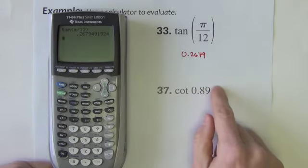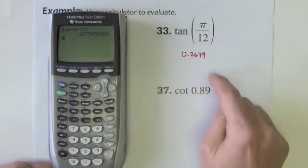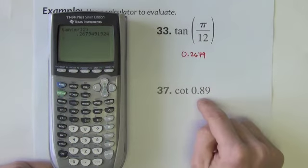Cotangent. Again there's no degree symbol. So even though I don't see pi, the lack of the degree symbol tells me this is a radian measurement.